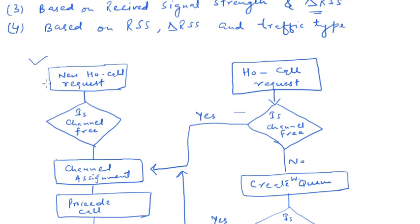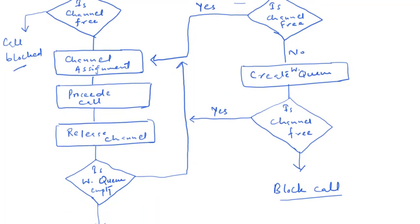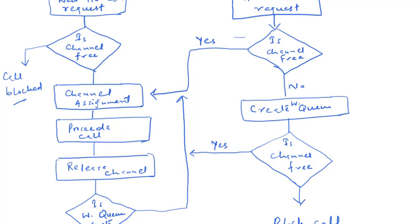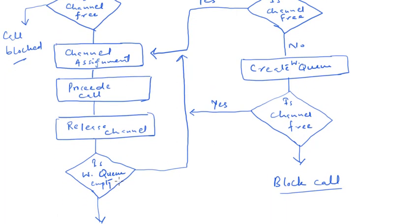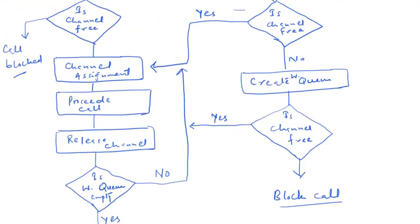In the normal case when we do not prioritize the handoff, a new handoff call request is received. If a channel is available, that channel is assigned; if not, the call is blocked. If the channel is assigned, you proceed with the ongoing call, and after completion you release the channel. After releasing, you check if the queue is empty — if the queue is empty, the channel remains idle; if the queue is not empty, the idle channel is assigned to the handoff request in the queue.